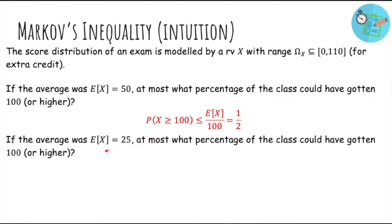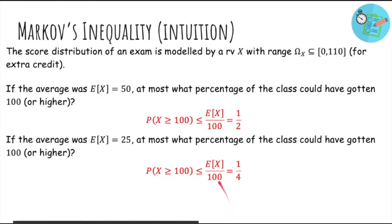So what if the average was 25? It's one-fourth, because if more than one-fourth of the class got 100, then the average would already be 25, or more than 25, even if everyone else got zeros. So again, we took the average and divided by 100.